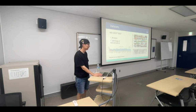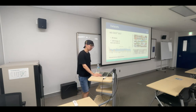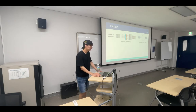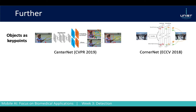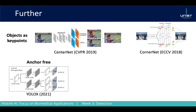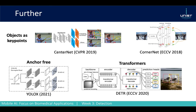If you want to explore further, an active research area is representing objects not with bounding boxes but with keypoints — either the center of the object or two corner points. Related papers to look at are CenterNet and CornerNet. Also, YOLOX was released this summer, and another trend is using transformer-based models for detection.